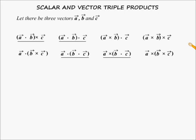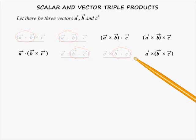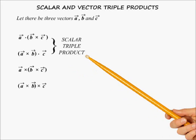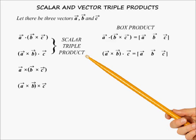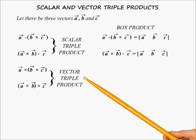Therefore we get 8 possible combinations of triple products. The underlined ones are meaningless because dot and cross operations need 2 vectors to be meaningful — the underlined ones have a dot product within parentheses, which is a scalar, and we cannot do any operation with a scalar. So we eliminate them. Out of the remaining 4, the first two are called scalar triple product because the result is a scalar quantity. These are sometimes called box products. The remaining two are called vector triple product because the result is a vector.